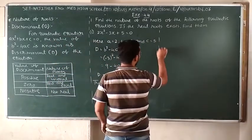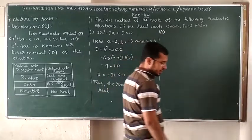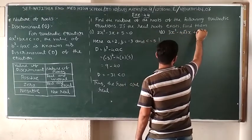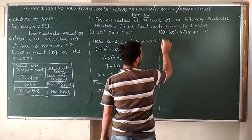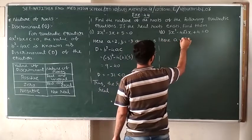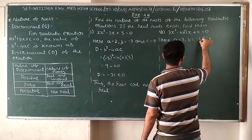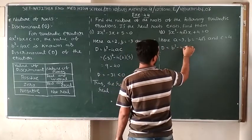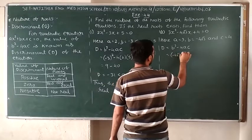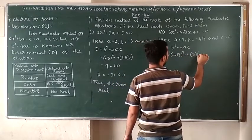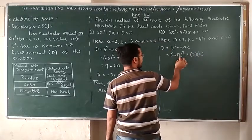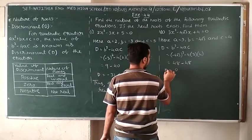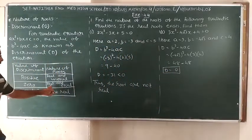Next, the second question is 3x squared minus 4 root 3 x plus 4 is equal to 0. Here a is equal to 3, b is equal to minus 4 root 3, and c is equal to 4. Using the formula of discriminant, D equals b squared minus 4ac equals minus 4 root 3 squared minus 4 into 3 into 4. We have 4 squared is 16, root 3 squared is 3, so 16 times 3 is 48, minus 4 times 3 times 4 which is 48. Therefore D is equal to 0. Since D is equal to 0, the roots are real and equal.